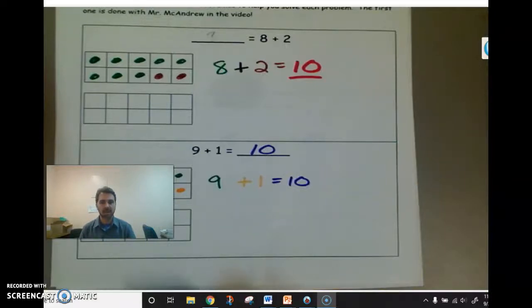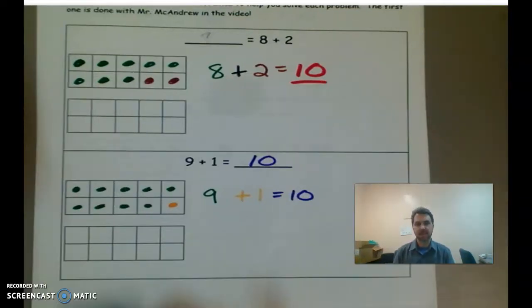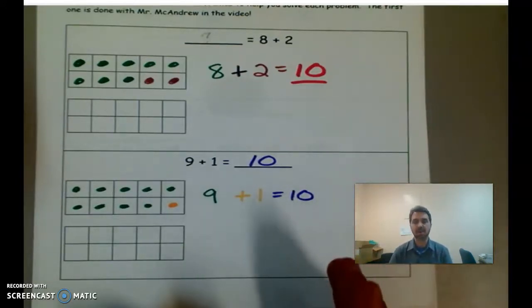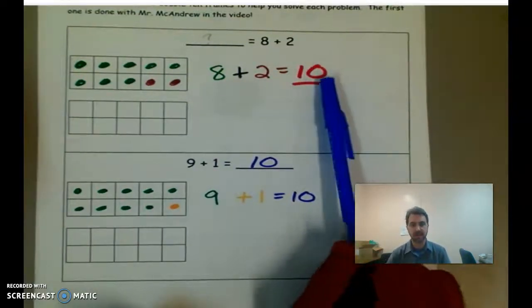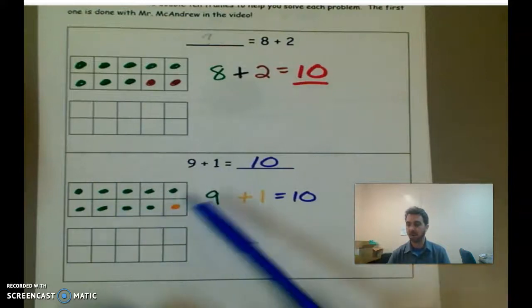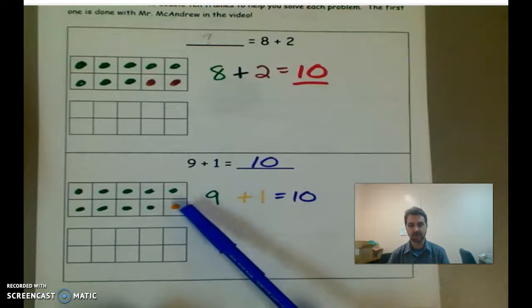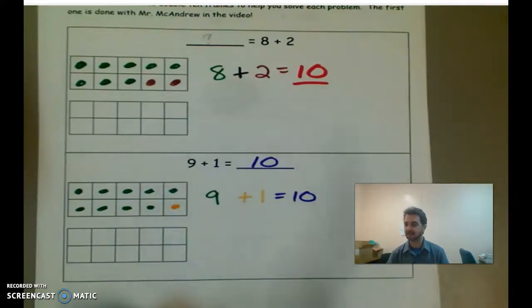All right, so welcome back. So let me float over here. So yesterday, you found that they all, all the numbers added up to 10. So these are all 10 partners. So eight and two makes 10. We did that together. All right. Nine and one, those are 10 partners. All right. Because that fills up the 10 frame. If you have nine butterflies plus one more, that fills up your net.